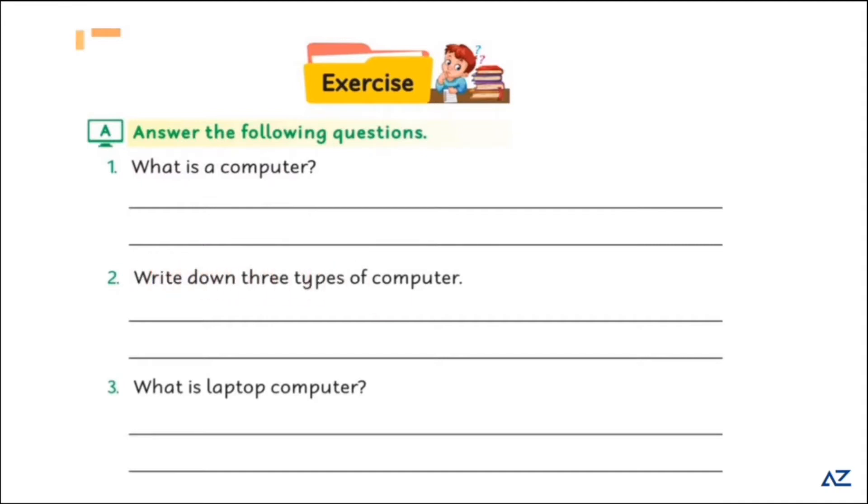Write down three types of computer. There are three types of computer like desktop computer, laptop computer and tablet computer. What is a laptop computer? Laptop computer kya hota hai? It is smaller than desktop computer. We can carry it anywhere.